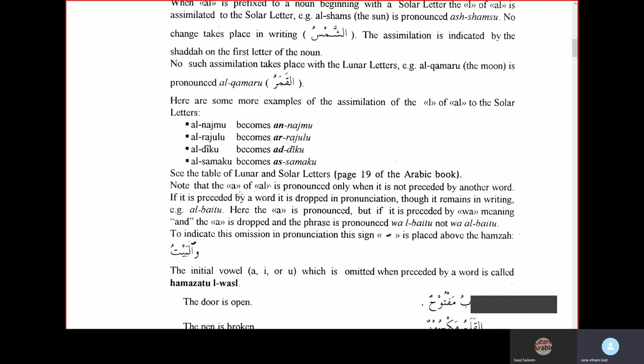Note that the alif of al is pronounced only when it is not preceded by another word. If it is preceded by a word, it is dropped in pronunciation, though it remains in writing. For example, al-baytu - here the alif of al-baytu is pronounced, but if it is preceded by wa, meaning and, the alif is dropped and the phrase is pronounced as wal-baytu. It is not pronounced as wa-al-baytu. No, you pronounce it as wal-baytu.